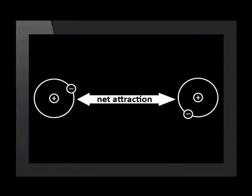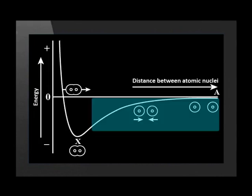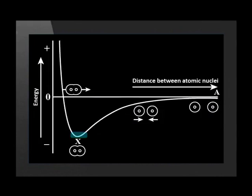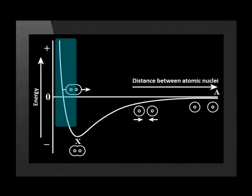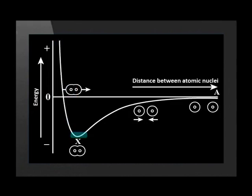Further than this distance, they can do work on one another as they accelerate together. So they have more chemical potential energy than their minimum. Closer than this distance, they can do work on one another as they accelerate apart. So they have more chemical potential energy than their minimum.